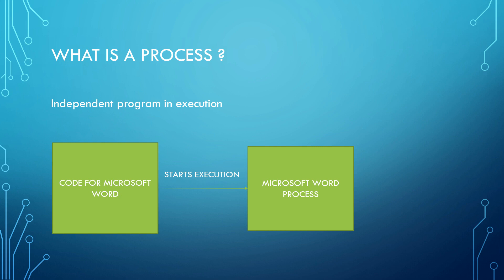Let's start with what is a process. A process can be called as an independent program which is in execution. For example, consider Microsoft Word, which is installed in our computer. Whenever we double-click on the Microsoft Word icon, the program gets loaded into the main memory or the RAM and the CPU starts executing that program. When the CPU starts executing the program, it becomes a process. Earlier it was a program, and when the CPU starts executing it, it became a process.